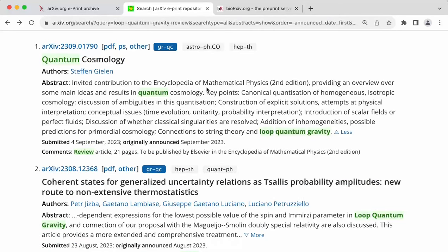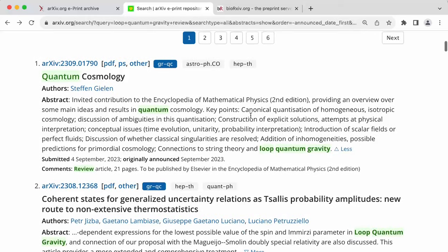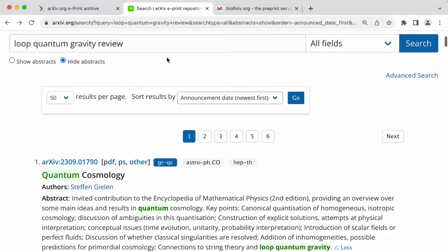So let's look at this paper on quantum cosmology. It's an invited contribution to the Encyclopedia of Mathematical Physics, providing an overview over some main ideas and results in quantum cosmology. Now, whenever you search for a paper, which is a review or an introductory article, you will get review papers at various levels of technicality. There will be some papers which will assume that you are an undergraduate student, others will assume that you're a graduate student, and still others will assume that you are a seasoned researcher who is just looking to quickly learn about a new field.